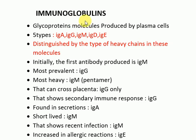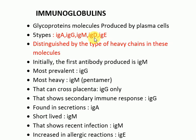The plasma cells then produce antibodies or immunoglobulins. There are five types: IgA, IgG, IgM, IgD, and IgE. They are distinguished by the type of heavy chains. They are Y-shaped structures having two heavy chains and two light chains. IgA has an alpha heavy chain, IgG has gamma, IgM has mu, IgD has delta, and IgE has epsilon.